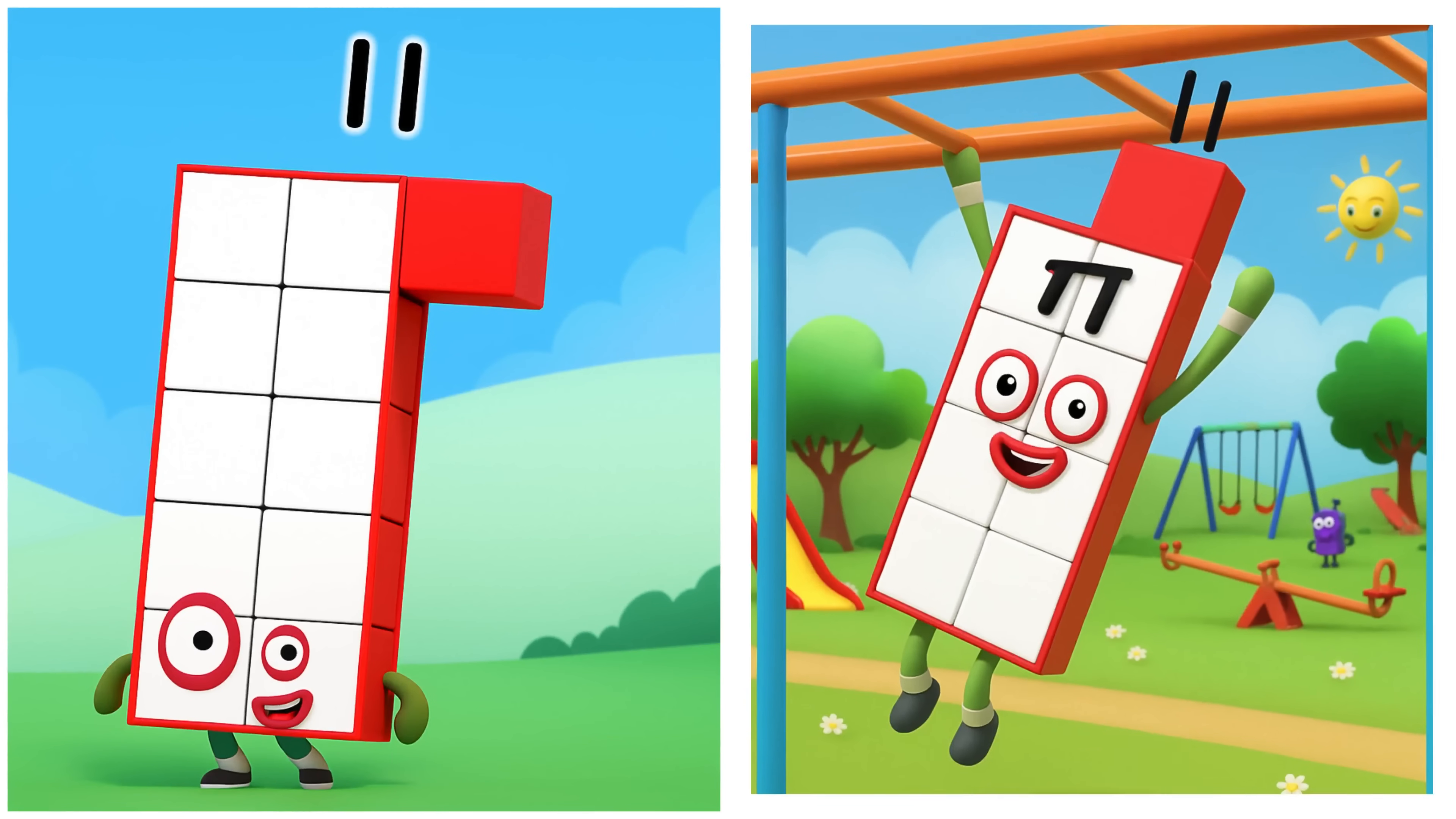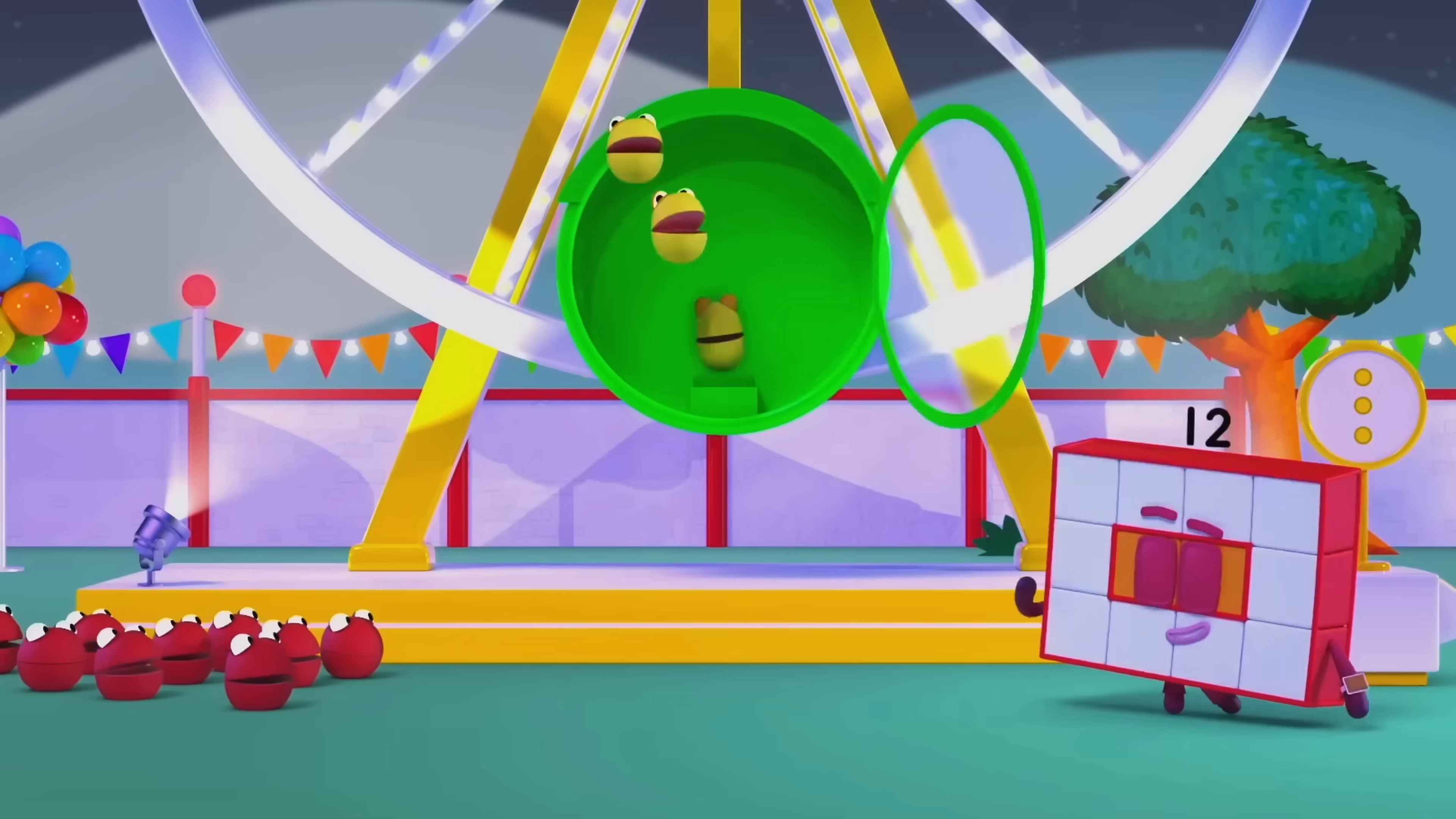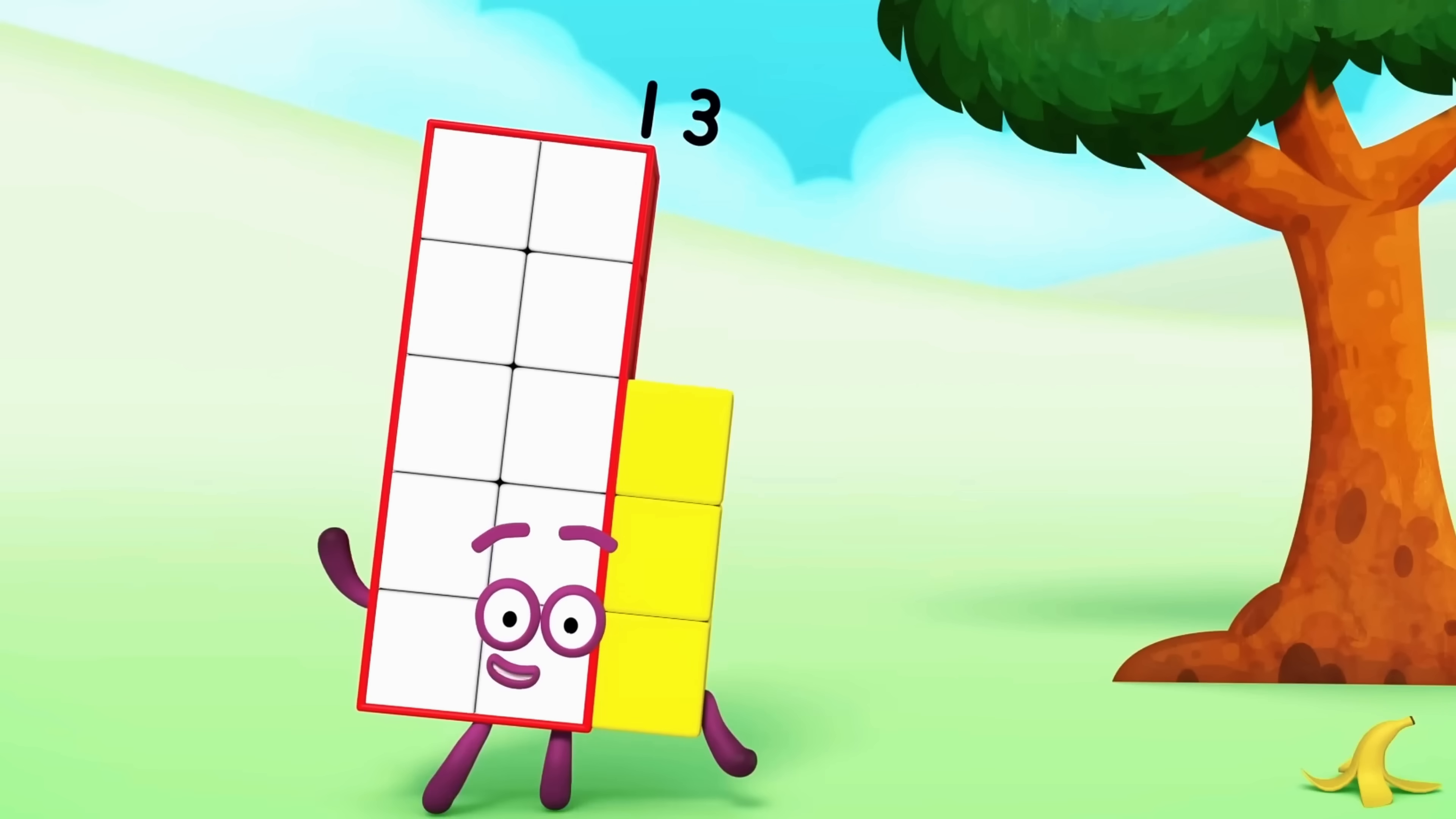Eleven. Eleven hangs on the monkey bars. That's better! Twelve. Twelve climbs across the monkey bars. Now, little ones, are you ready for the... Thirteen. Thirteen slides down the slide. Oh, unlucky. Oh, hi!